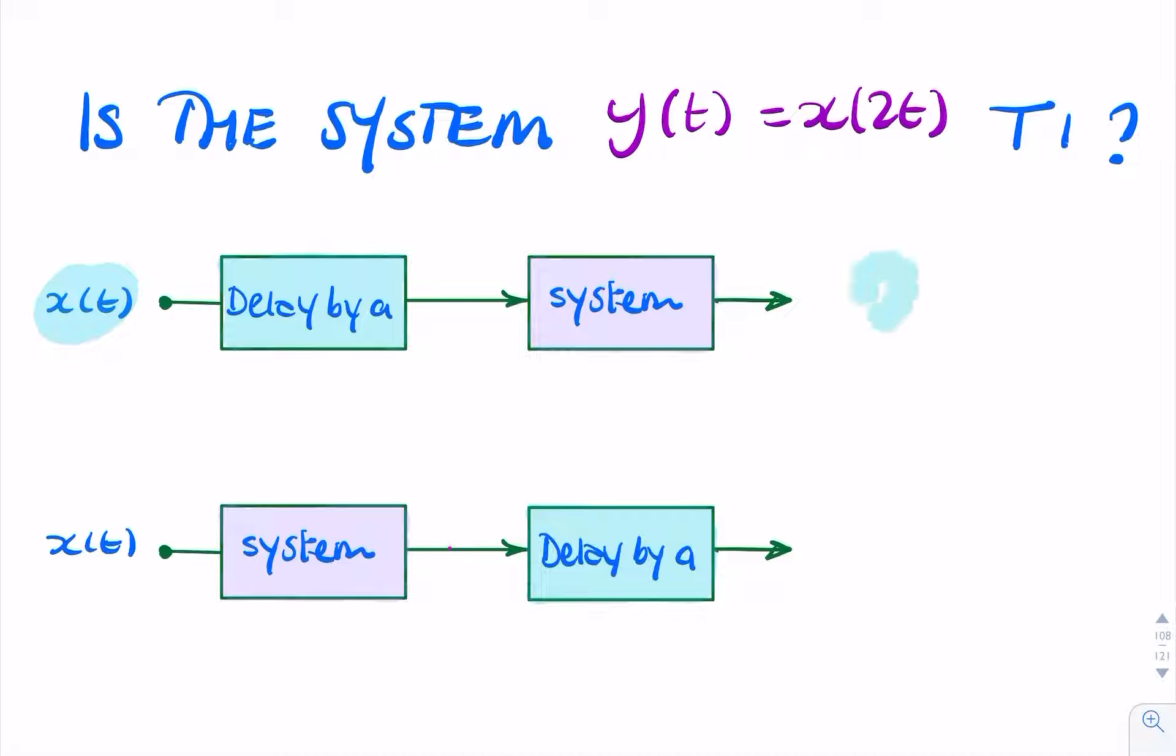We check for the output, and then we do the same, but this time we apply it to the system before the delay, and we check for the output, and see whether these two outputs are the same.